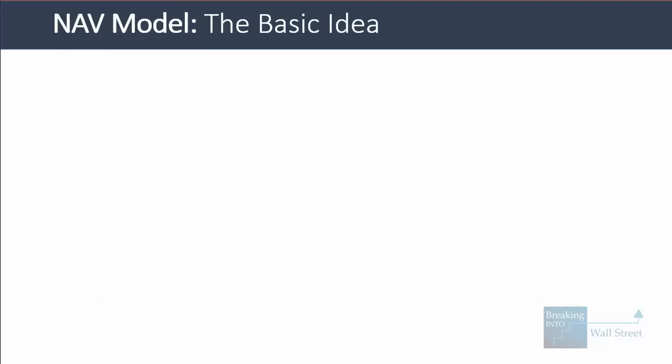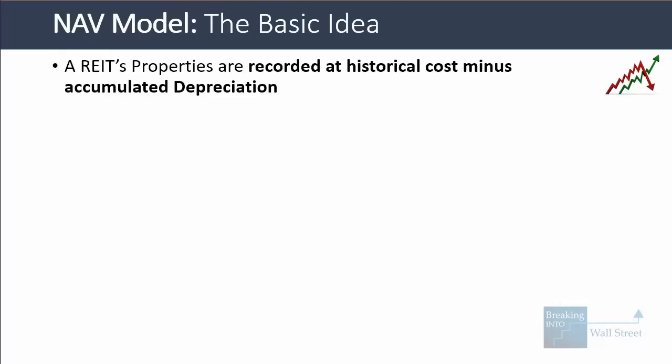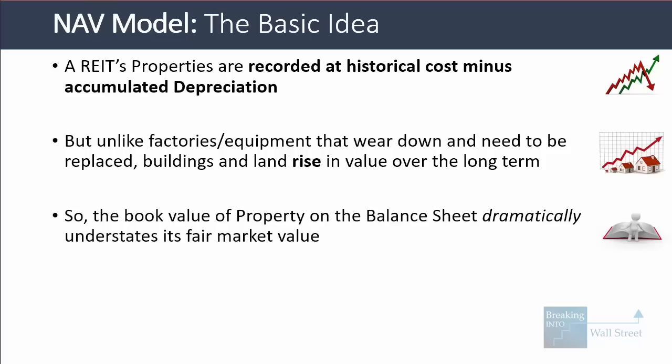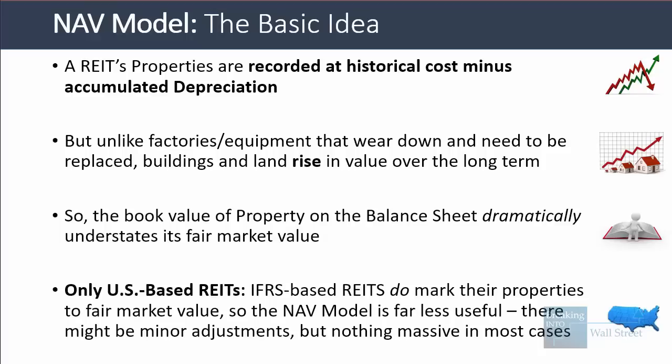Here's the basic idea behind an NAV model. A REIT's properties are recorded at historical cost minus accumulated depreciation on the balance sheet. But unlike factories and equipment that wear down and need to be replaced over time, buildings and land tend to rise in value and appreciate over the long term. So the book value of a property on the balance sheet tends to dramatically understate its fair market value. This concept really only applies to US-based REITs because REITs that follow IFRS do mark their properties to fair market value, so the NAV model is far less useful there.